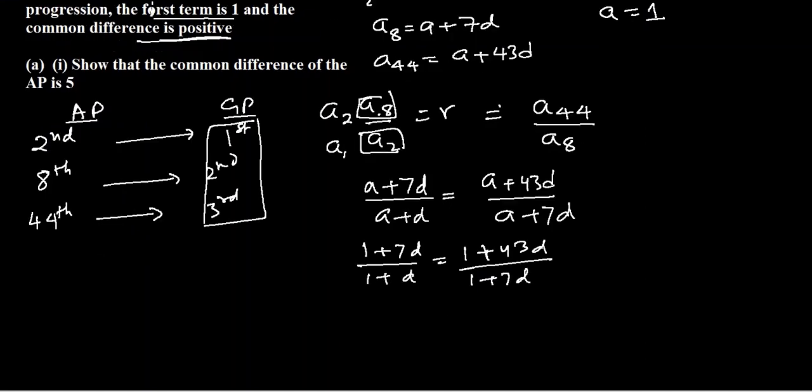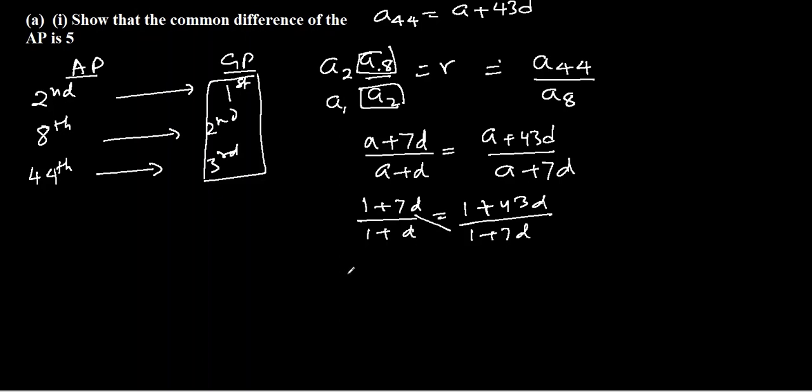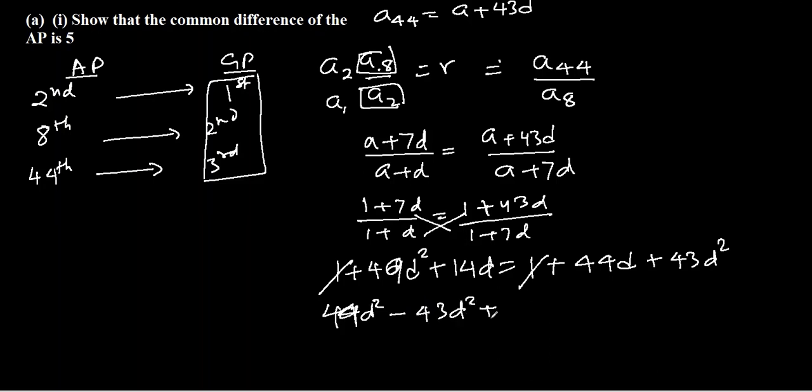Now if we cross multiply, this will be the square of 1 plus 7D, which will be 1 plus 49D squared plus 14D. On the other side, it will be 1 plus 43D plus 44D plus 43D squared. So let's bring everything to the left side. 1 and 1 will cancel.